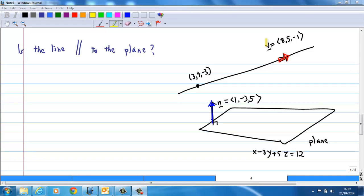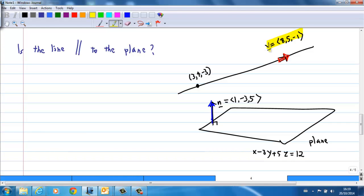Putting the line and the plane together, we look at the equation of the line. The direction of the line is given by (8, 5, -1), and the vector perpendicular to the plane is (1, -3, 5). Is the line parallel to the plane? We know that the line is parallel to the plane only when v is perpendicular to n, because when the direction v of the line is perpendicular to n, then the line will be parallel to the plane.